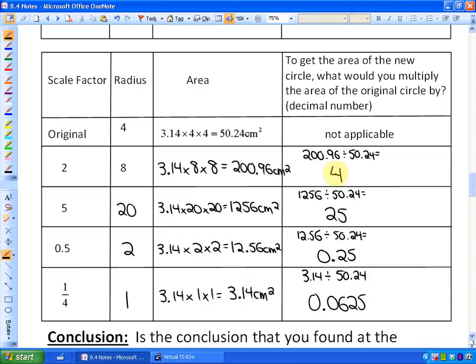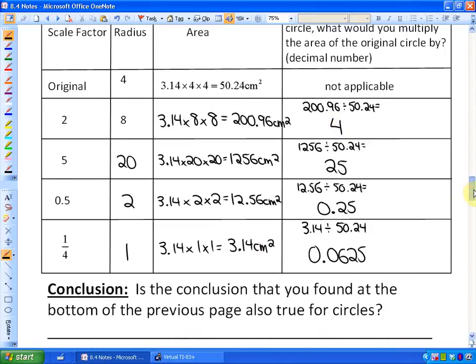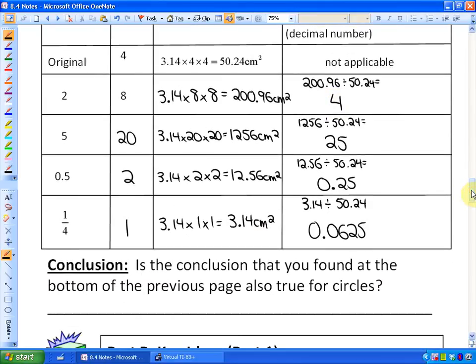So what we're asking ourselves, and this is the conclusion piece here, is the conclusion that you found at the bottom of the previous page, so the previous activity or the previous YouTube lesson, also true for circles? So in other words, is this here, because we found out that the original area times the scale factor squared is equal to the new area.